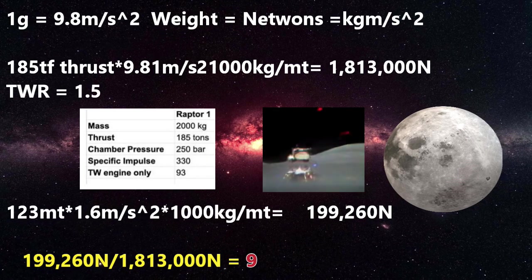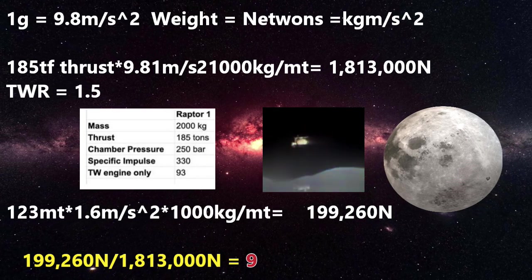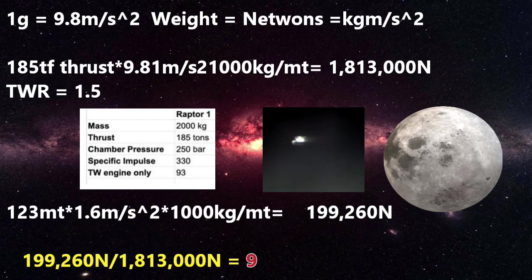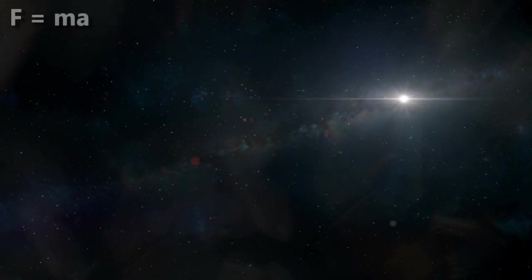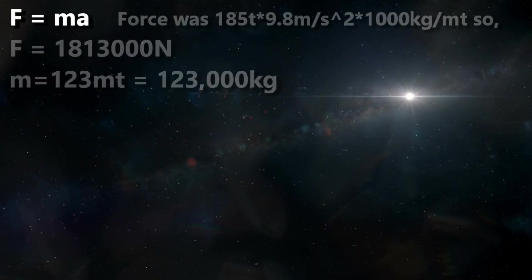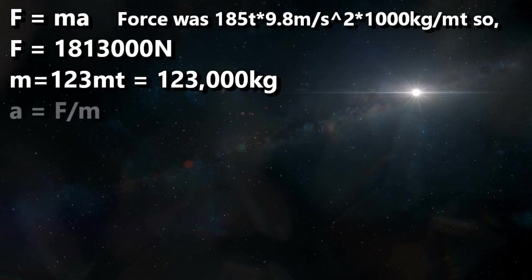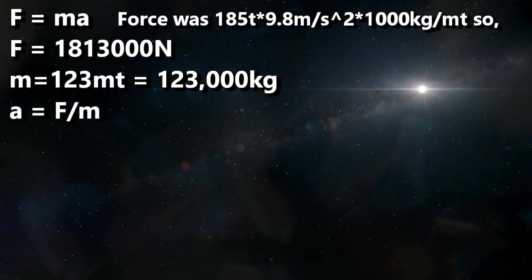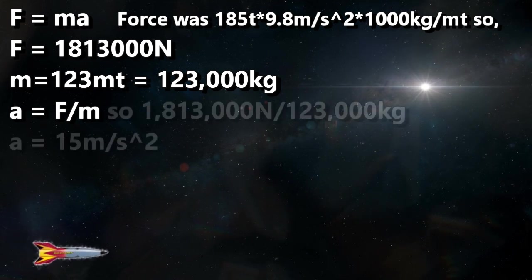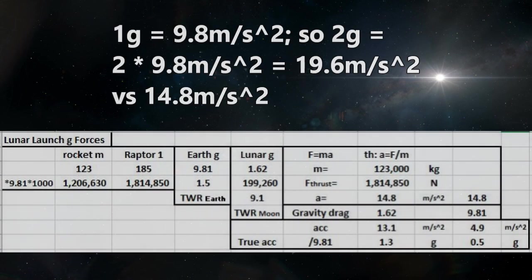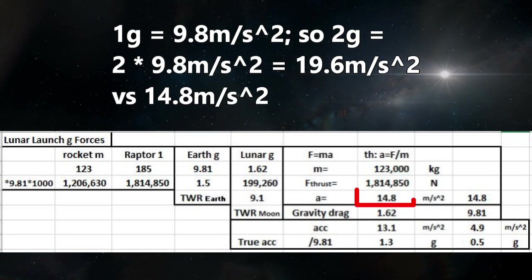I quickly assumed that this meant the astronauts would suffer 9 Gs of acceleration. Well, I blew that one. We know that force equals mass times acceleration, and since we have the force and the mass, we can calculate the acceleration. If this rocket were in empty space, it would accelerate at 15 meters per second squared. And I immediately know that I was wrong on the G-forces, because this is not even 2 Gs.